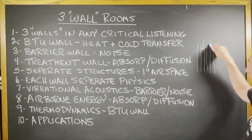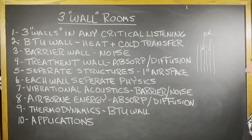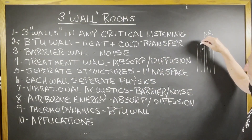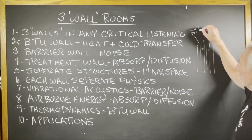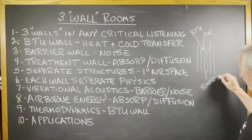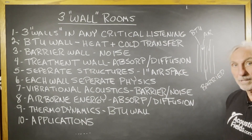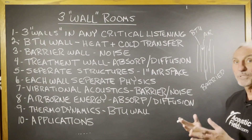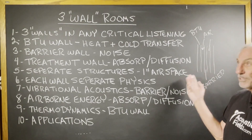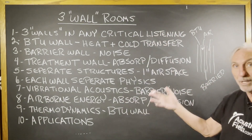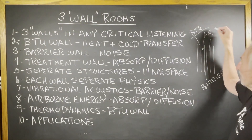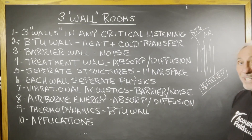And they should all be separated by air space. Now let's look at applications. A lot of times, if this is the BTU wall and this is the barrier, a lot of times we can combine those. We can put the barrier and the BTU wall together to save space, depending on noise issues. So I think that's where the confusion lies — I wanted to break this down into separate structures with separate physics and separate functions. In application, a lot of times we can take the BTU and the barrier and combine them, but a lot of times we can't.